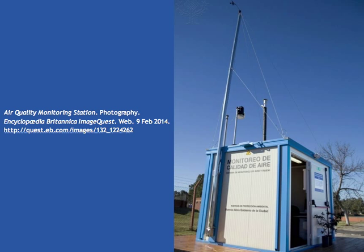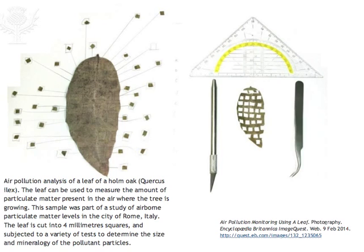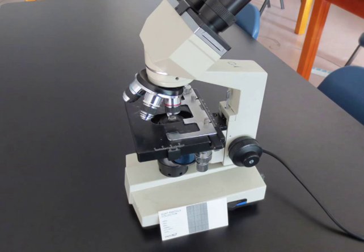In many MEDCs, or more economically developed countries, special air quality monitoring stations are set up to track a variety of airborne pollutants. A simple, low-cost yet effective way to obtain data on the amount and type of particulate matter in the air is to take samples from leaves.